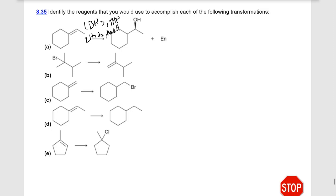In the next one, we're getting an elimination reaction and we're getting the less substituted alkene, which is our Hofmann product. All we need for this is a big, bulky base, like potassium tert-butoxide.